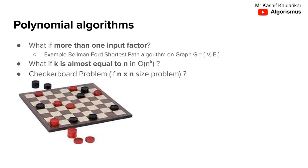It's not necessary that input should be only one, that is n. For example, in the case of graphs, time complexity depends upon number of edges and vertices. The time complexity is Big O of e times v, for example in Bellman-Ford shortest path algorithm.